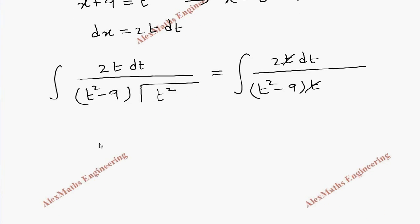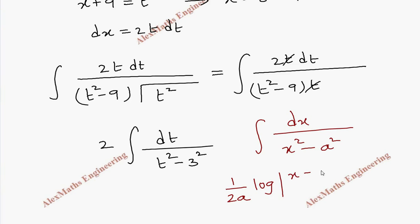And 2 is a constant which can be taken outside the integration. We are left with integral dt by t square minus 9, which can be written as t square minus 3 square. We are going to use the formula: integral dx by x square minus a square is 1 by 2a log mod (x minus a)/(x plus a) plus c.